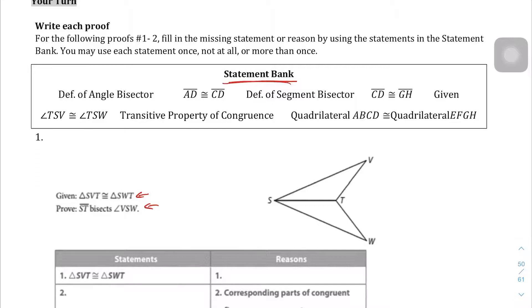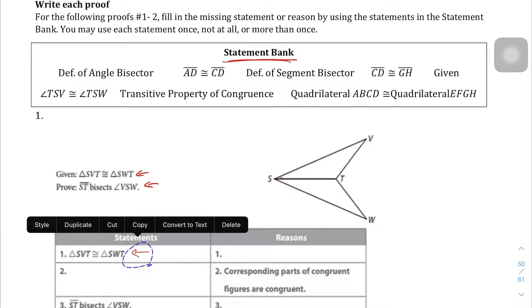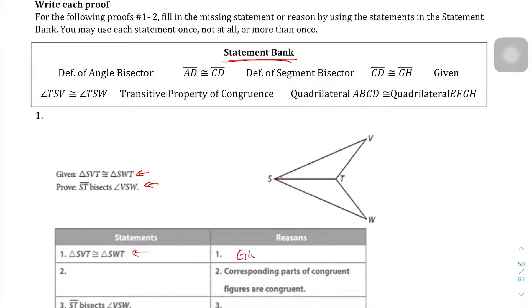In question number 1, we're trying to prove that ST is an angle bisector for the bigger angle VSW. We want to show that this angle is equal to this angle. So, let's jump into it. Now, the first statement is generally just a given statement. How do I know if it's a given statement? Well, take a look at it. Triangle SVT is congruent to triangle SWT. And you'll see that, yes, in fact, we're given this statement right there. So, the reason that we're going to write is just given.